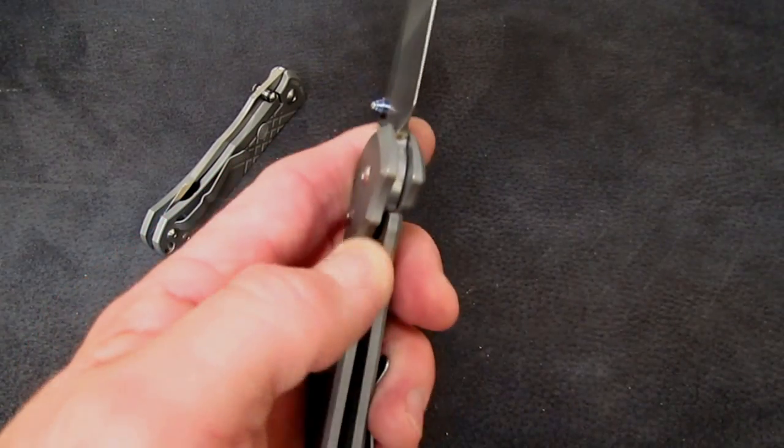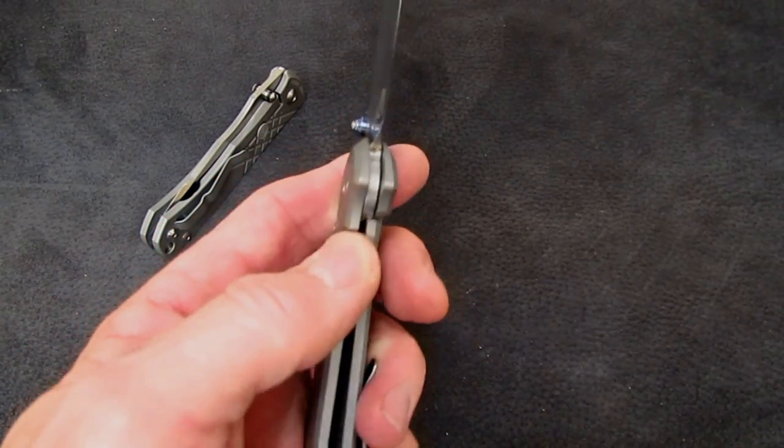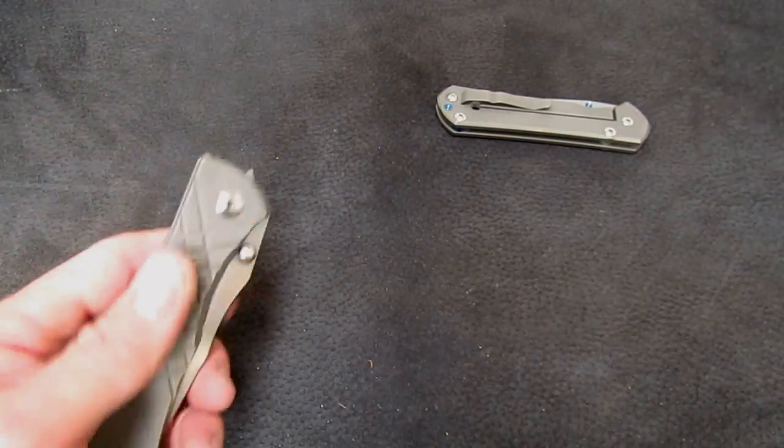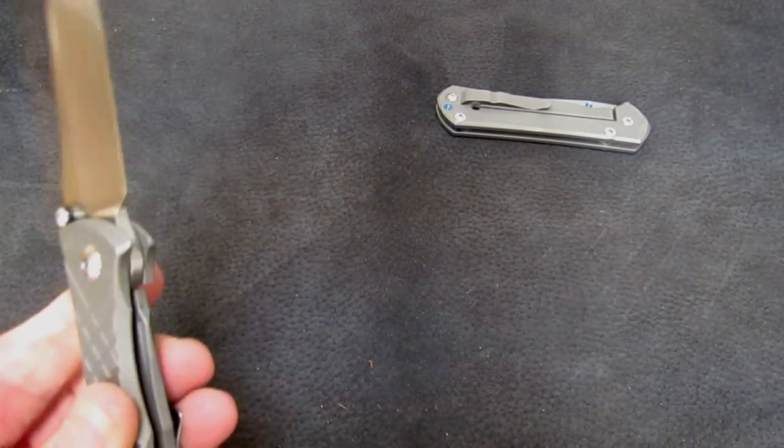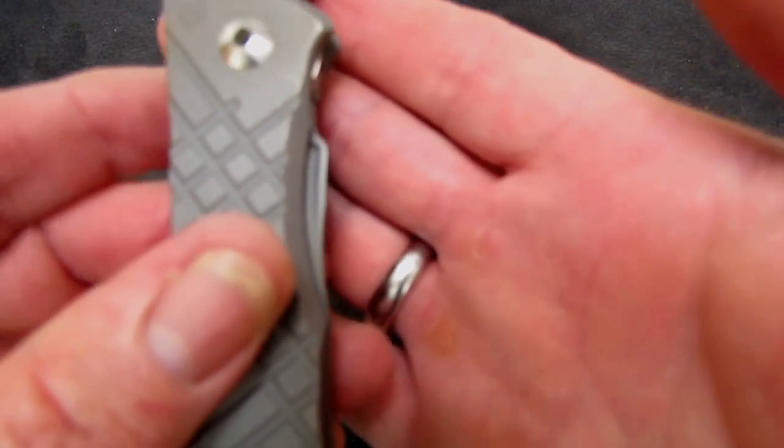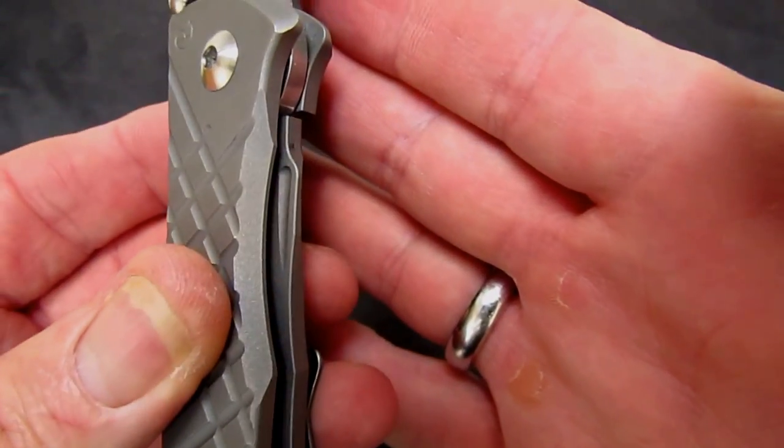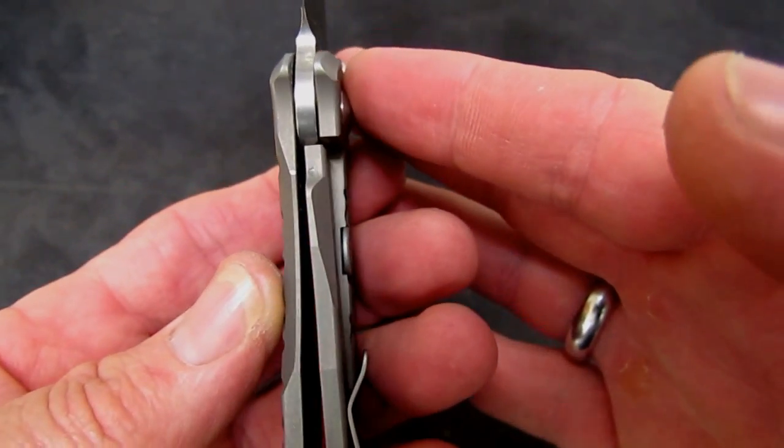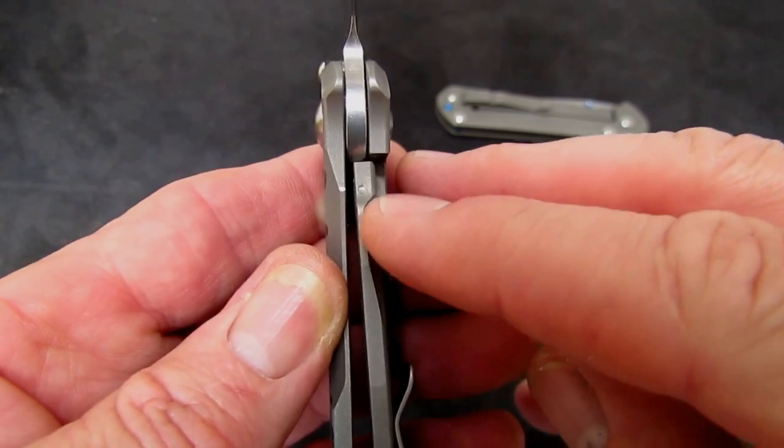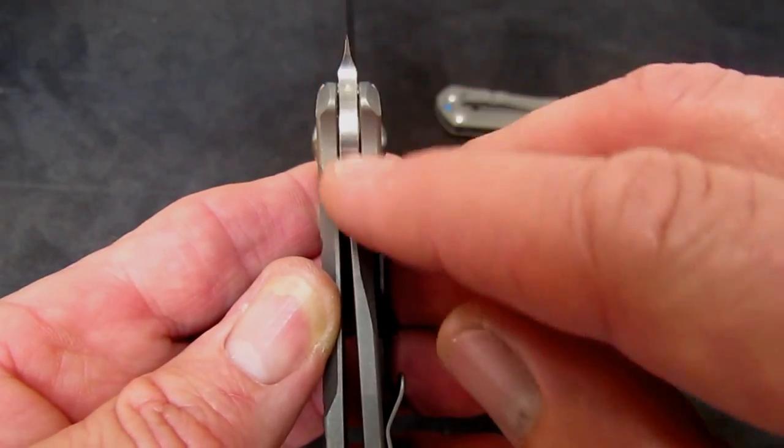The way you close the Umnumzaan is much different. A lot more engineering went into this release area of the lock bar. If you notice, these knives lock up in a way that appears pretty late, so it puts this point almost right in the middle of the blade tang.